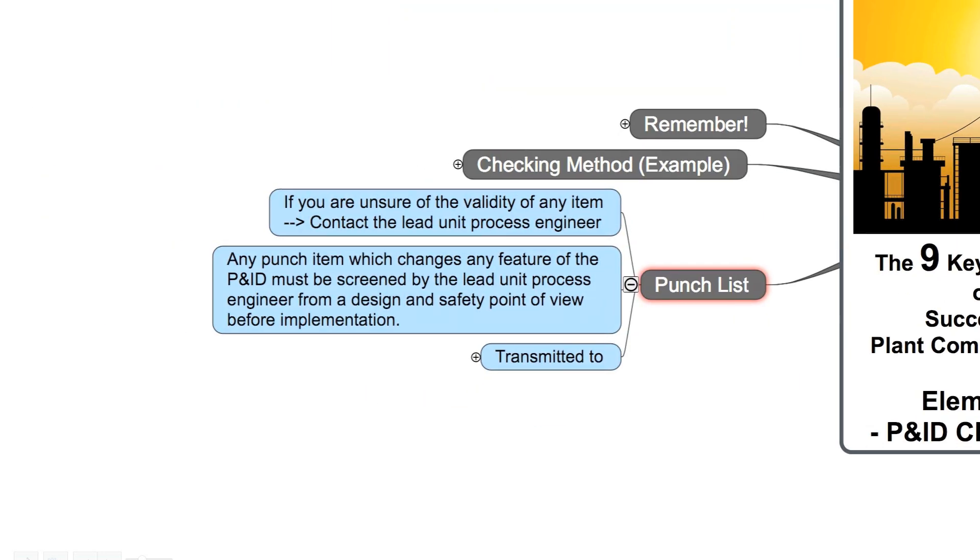When you perform the P&ID check, you will for sure find one or more deviations from the P&ID or other specifications. In such cases, you have to put this deviation into a punch list. If you are unsure of the validity of any item, please contact the lead unit process engineer to discuss it. Here is one important advice: any punch item which changes any feature of the P&ID must be screened by the lead unit process engineer from a design and safety point of view before implementation.